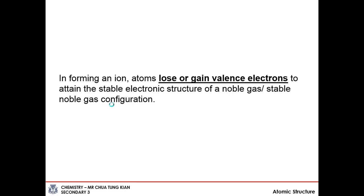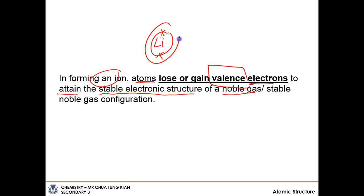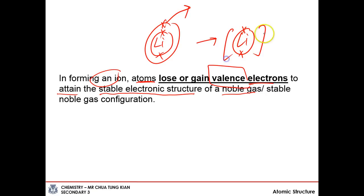In essence, to form an ion, atoms lose or gain valence electrons only — not the inner shell electrons — to attain the stable electronic structure of a noble gas. For example, lithium only loses its one valence electron to give Li⁺; it does not lose the two inner electrons. Only valence electrons are involved in the formation of an ion.